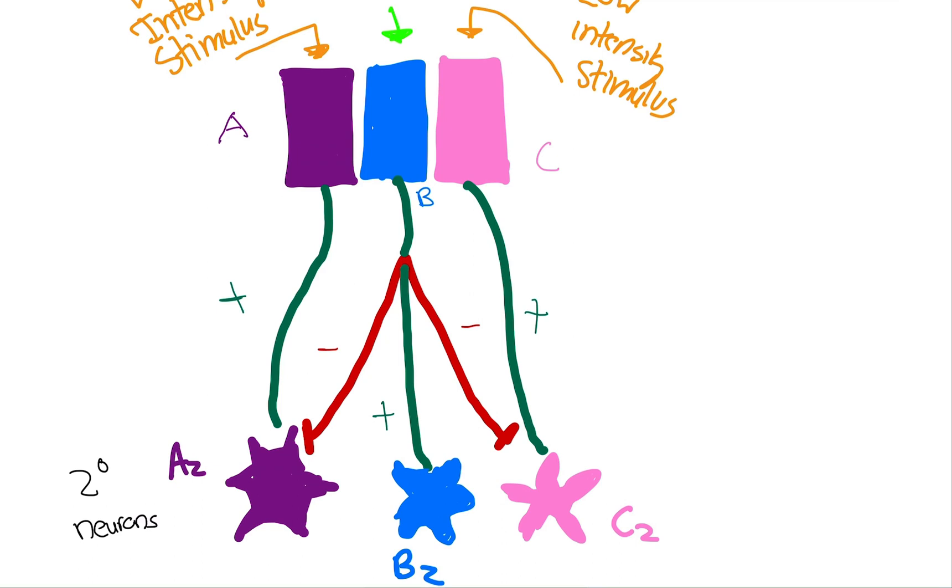It's going to basically transmit the signal, fire an action potential. The action potential is essentially going to go down the axon and synapse with the second order neuron that's to come.